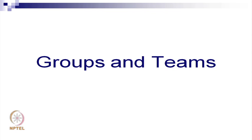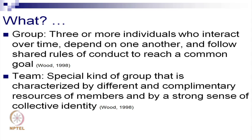Groups are constituted of three or more individuals who interact over time, depend on one another, and follow shared rules of conduct to reach a common goal — this definition was given by Julia Wood in 1998. A team is a special kind of group characterized by different and complementary resources of members and a strong sense of collective identity. Groups are more permanent and long-lasting, while teams are a subset of groups — they are specialized, focused, their resources are complementary, and they tend to disintegrate after accomplishing their purpose.